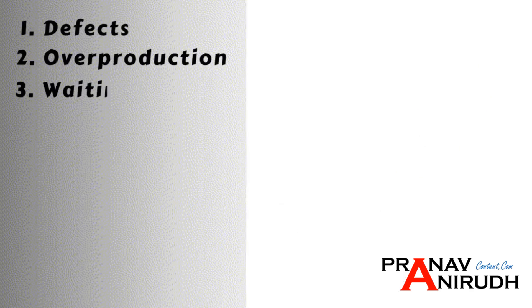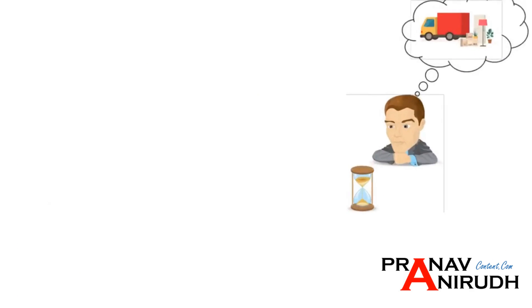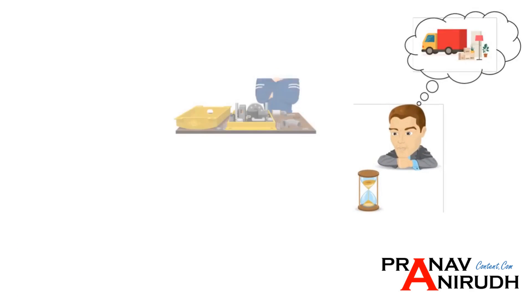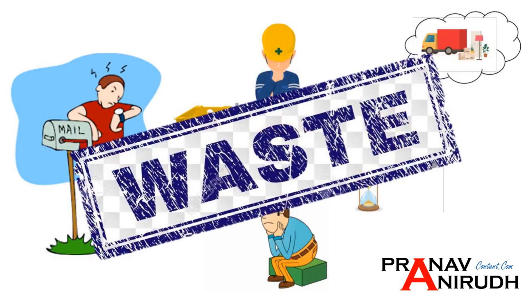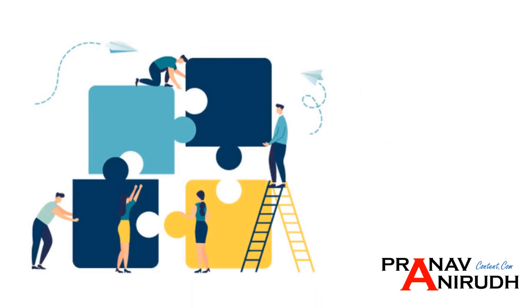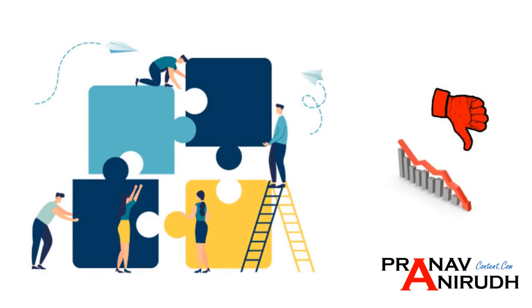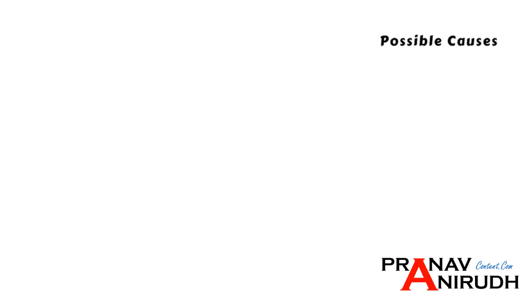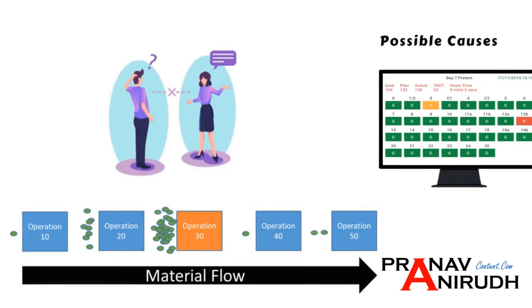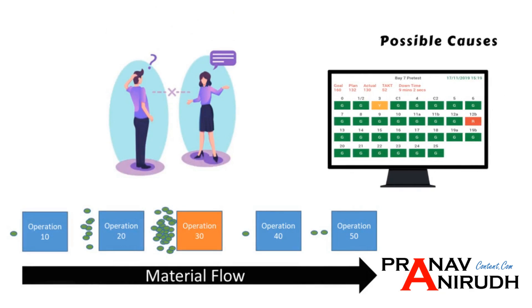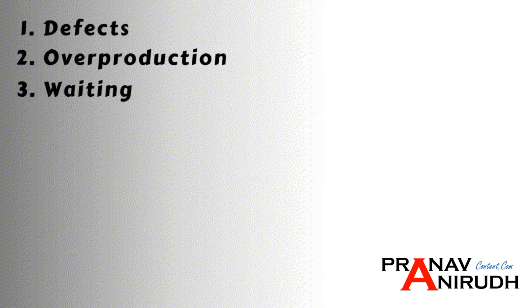The next waste is Waiting. Waiting for materials, equipment, a person, or information is a waste because waiting doesn't transform the product and doesn't add any value. Possible causes for waiting include no line balancing, communication gaps, and lack of end-to-end systems.